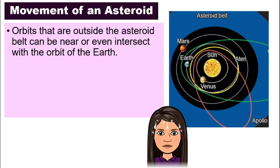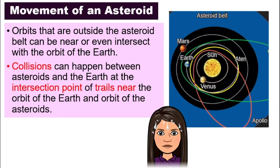What problem is there if they intersect our orbit? There's a big problem. Let's look at this diagram. The red color here is the orbit of Apollo, one of the asteroids not found in the asteroid belt. The Earth orbits this way, so the Apollo orbit intersects the orbit of the Earth at two points, right here.